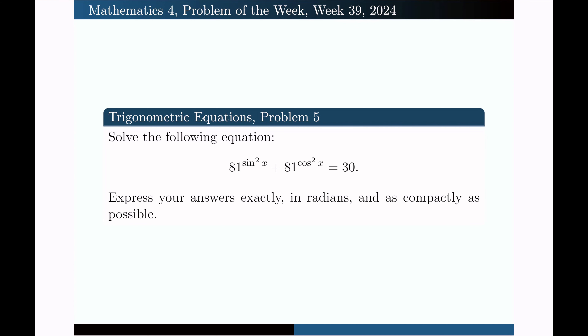Hello, in this video I'm going to solve the following problem on the topic of trigonometric equations: solve the equation 81 to the power of sine x squared plus 81 to the power of cosine x squared equals 30.